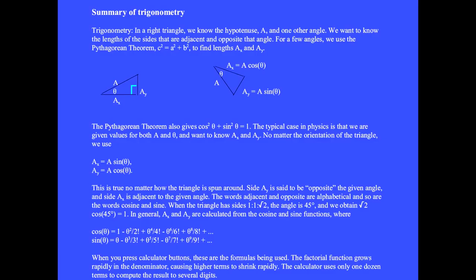In a right triangle we know the hypotenuse a and one other angle. We want to know the lengths of the sides that are adjacent and opposite that angle. For a few angles we can use the Pythagorean theorem to find lengths a_x and a_y.